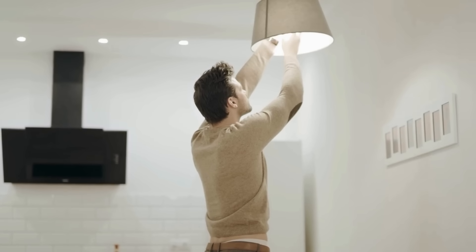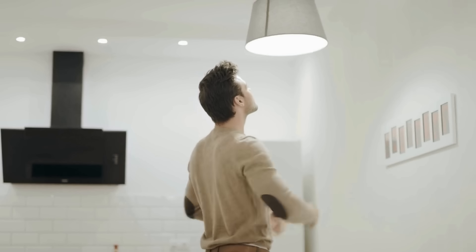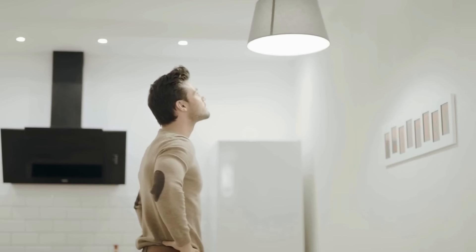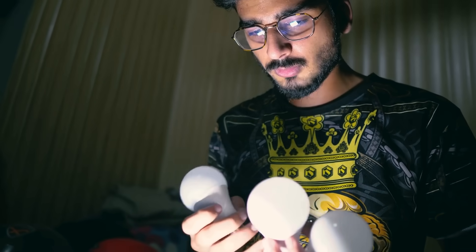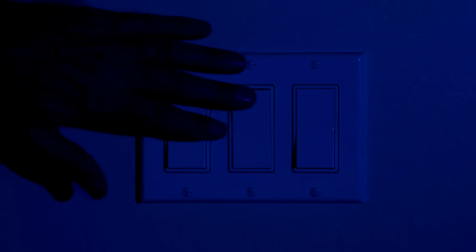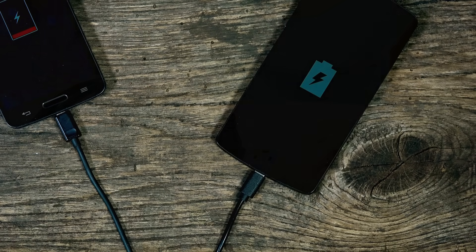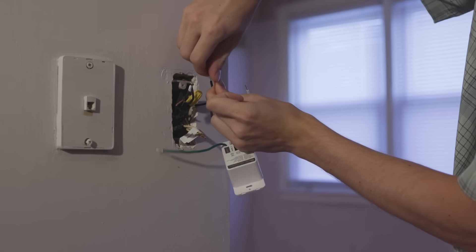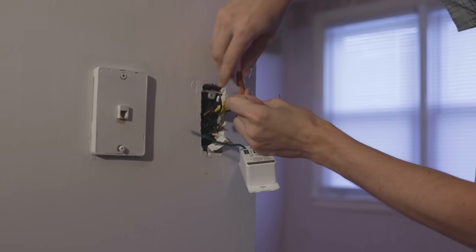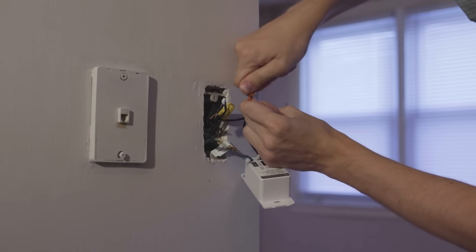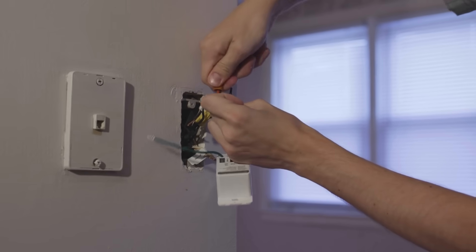Have you ever stopped to think about how electricity actually gets from the power lines outside into the light bulb above your head? It's something most of us take for granted. But behind that simplicity is an entire hidden system of wires, connections, and safety measures that make it all possible.